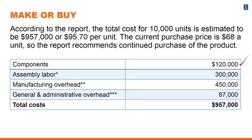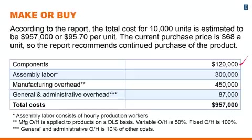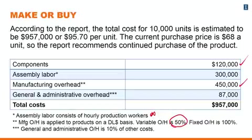Assembly labor amounted to $300,000, and assembly labor consists of hourly production workers. The third line reports manufacturing overhead at $450,000. Manufacturing overhead is applied on a direct labor dollar basis — for every direct labor dollar spent, 50% variable overhead is added, and fixed overhead is added at a rate of 100%, meaning dollar for dollar for each direct labor dollar spent.